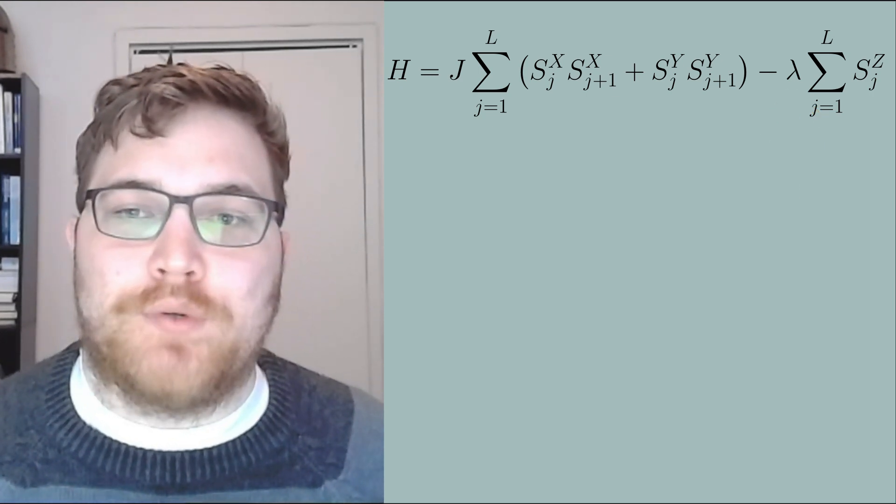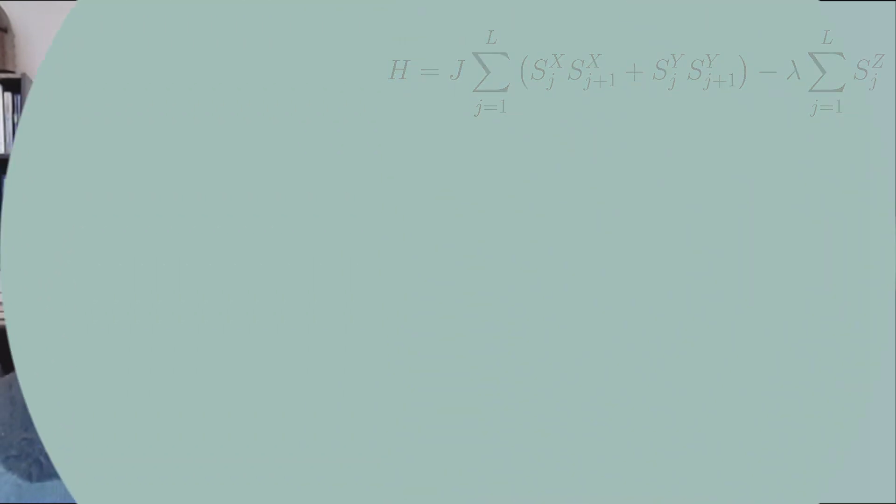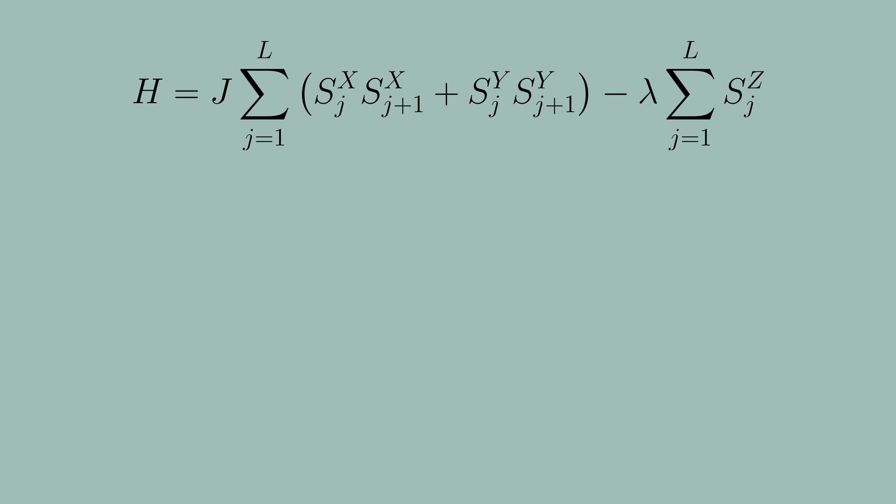The first thing we're going to want to do to solve this problem is put our Hamiltonian in a form that we can employ the Jordan-Wigner transformation to transform the problem to a fermionic picture. Before we do that, we need to convert our Hamiltonian to raising and lowering operators. And just before we proceed here, if you don't know what the Jordan-Wigner transformation is, I have a standalone video on that. I'll put the link in the description. You should go watch that before proceeding in this video.